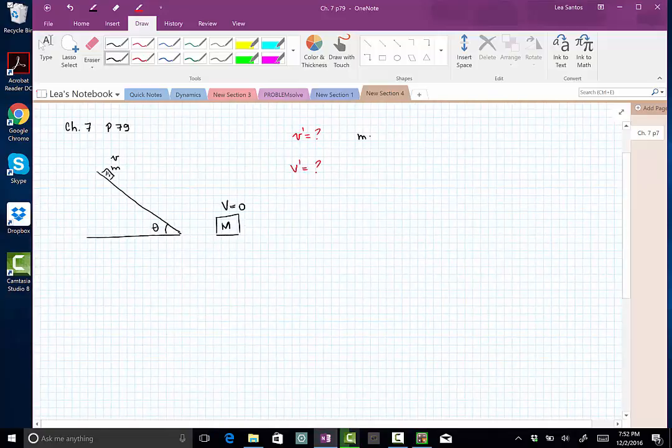So I'm going to use conservation of momentum: m small v plus big M big V equals m V prime plus big M big V prime.